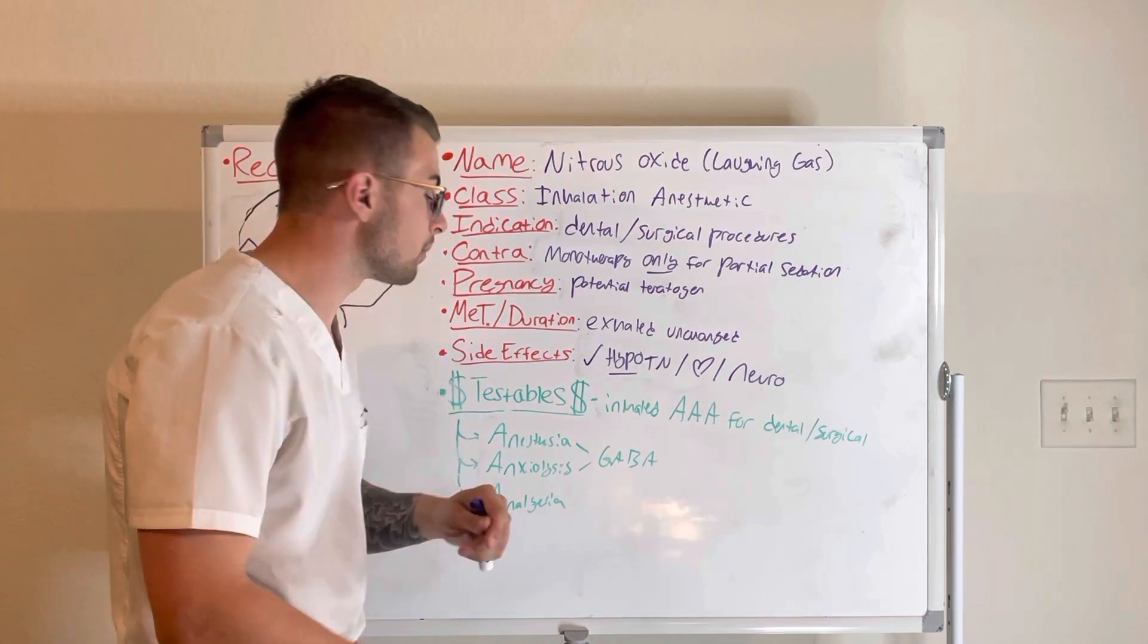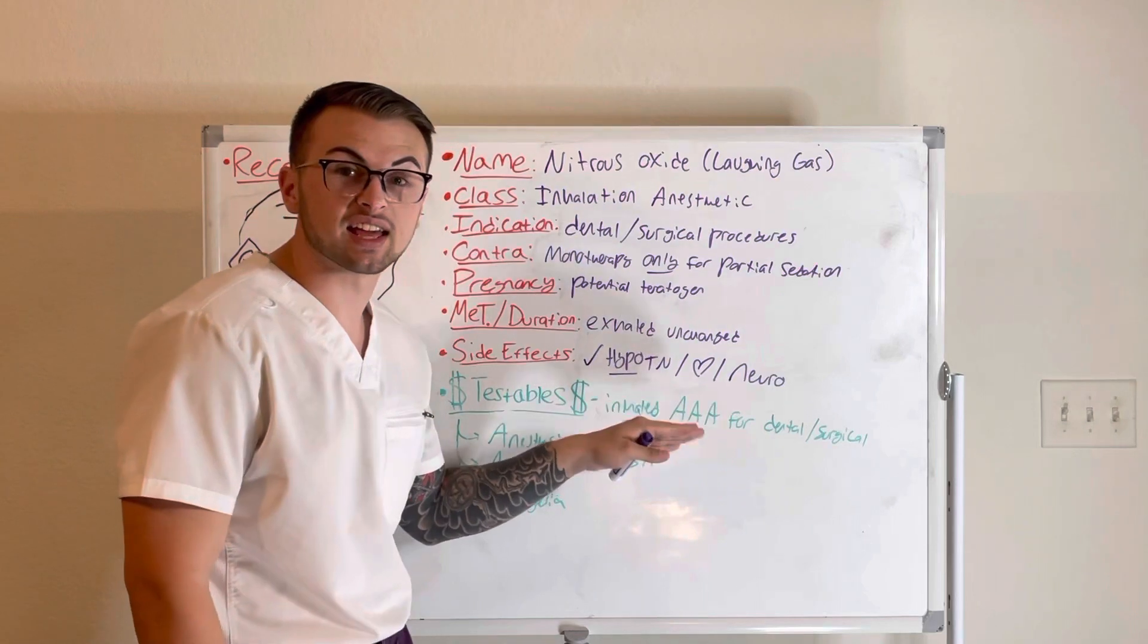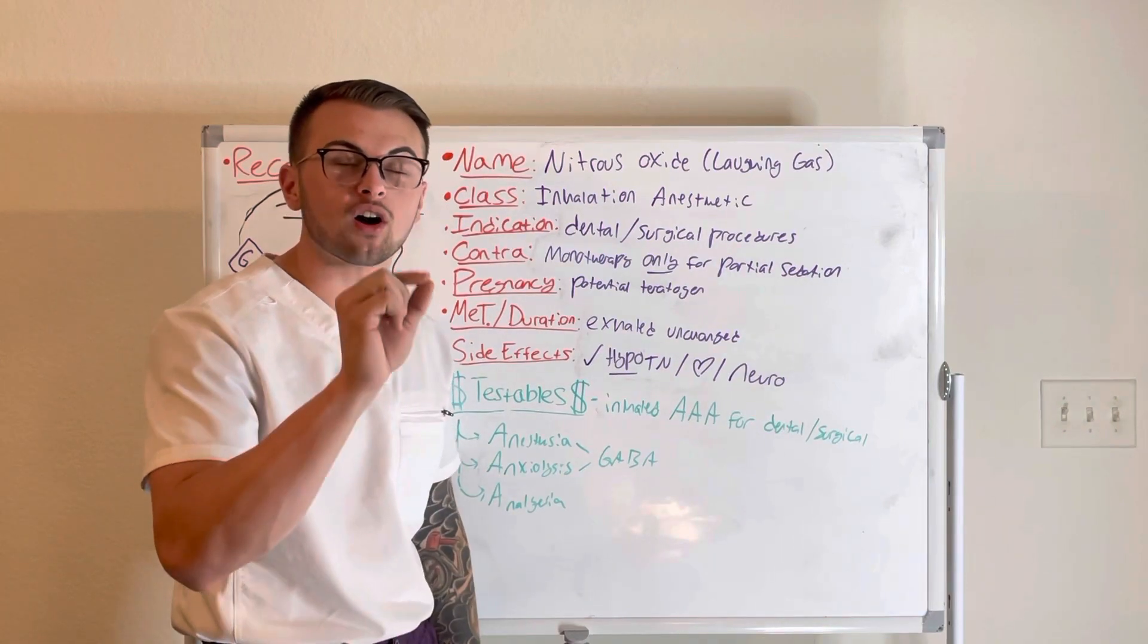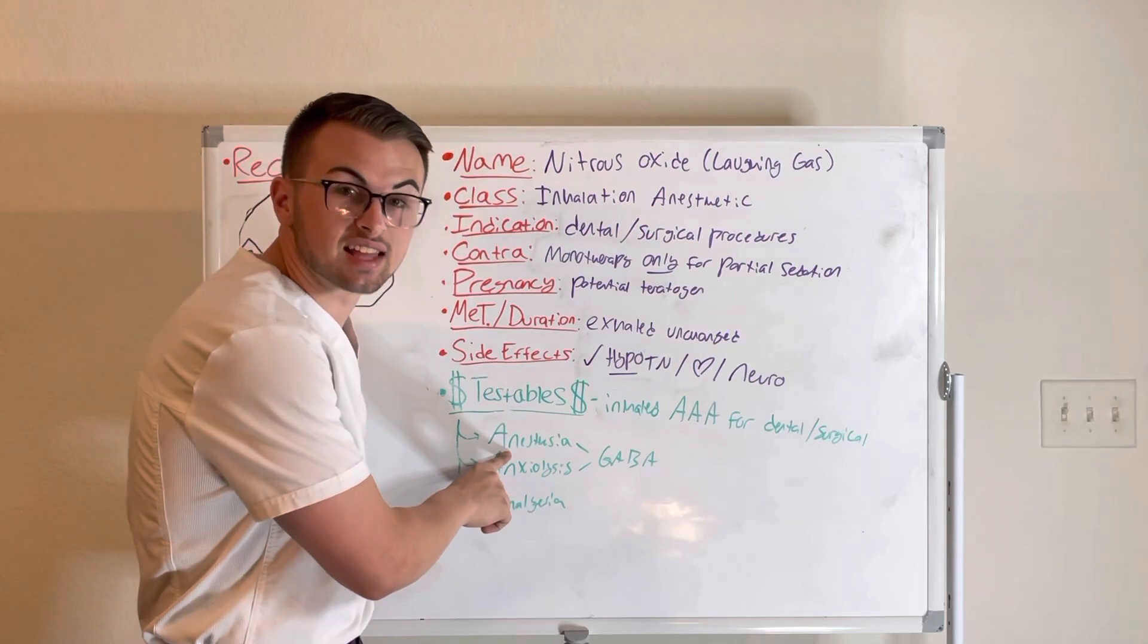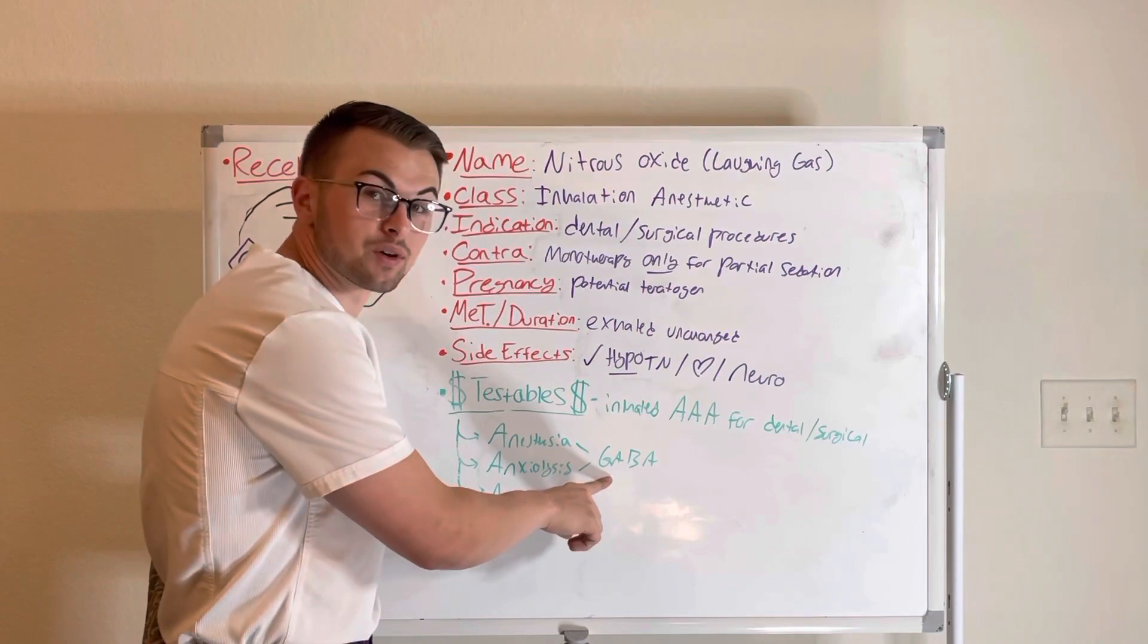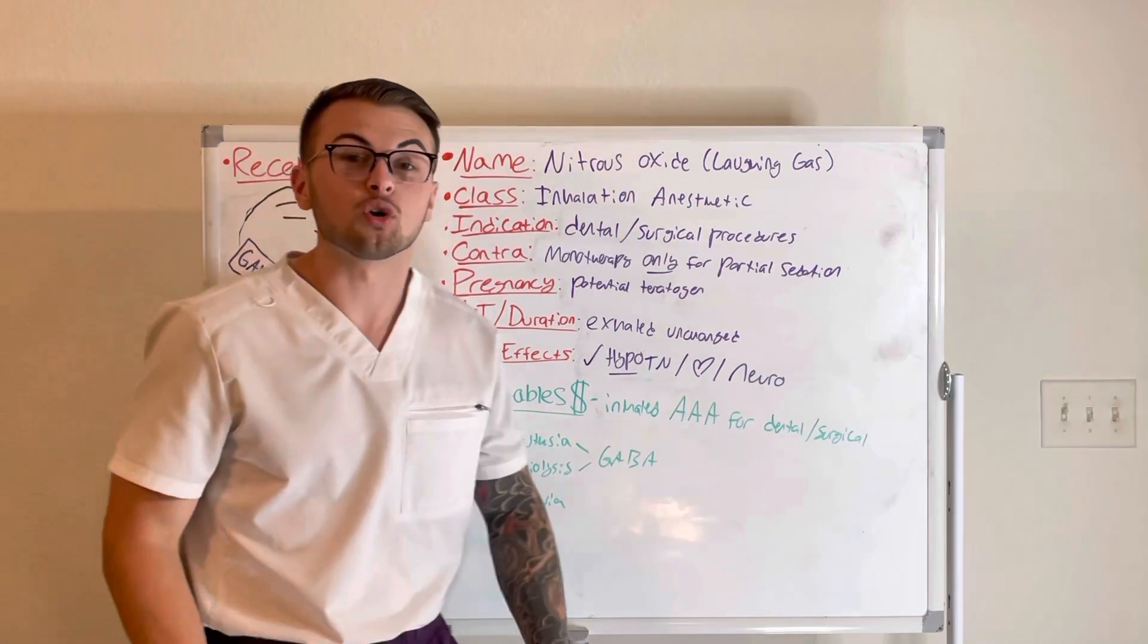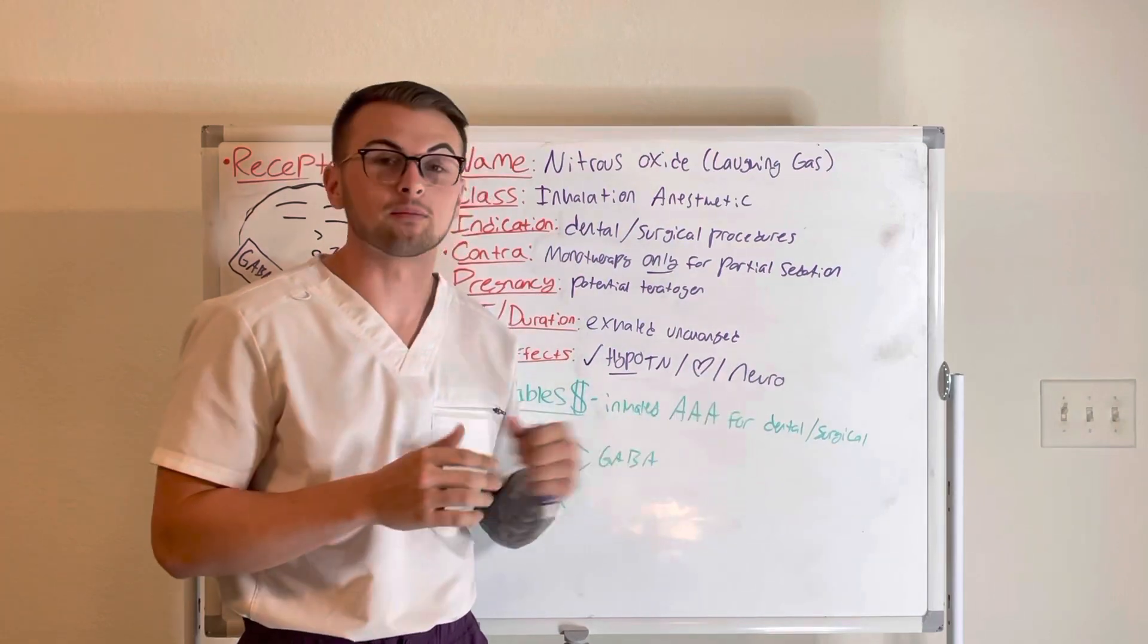Some commonly tested material about this medication: it is an inhaled anesthetic for dental and surgical procedures, and it works in three ways (emphasis on the A) - as an anesthetic and anxiolytic by activating our GABA receptors, and it produces analgesia by an opiate-related mechanism. As always, thank you for taking the time to learn with us today, and remember to like and subscribe for more content.